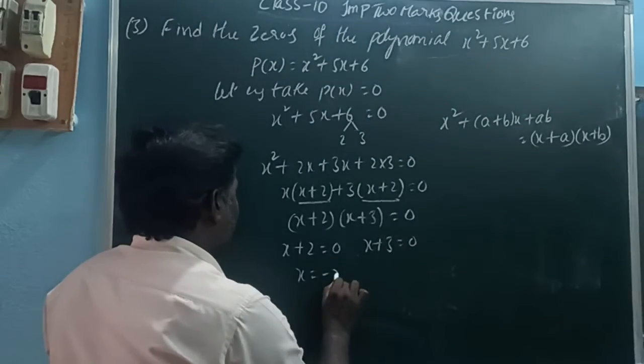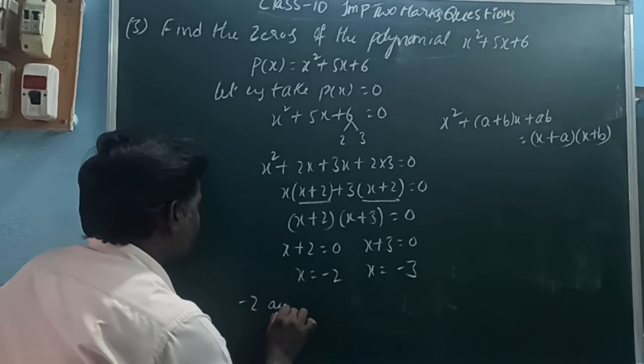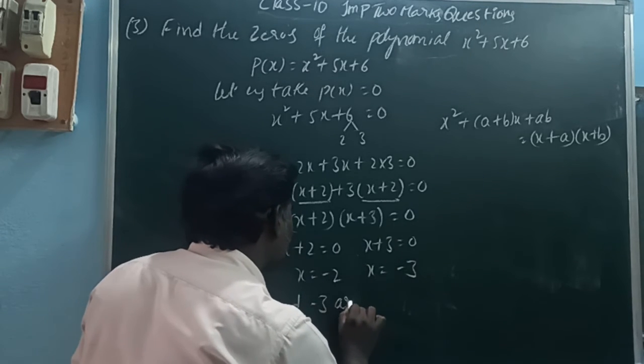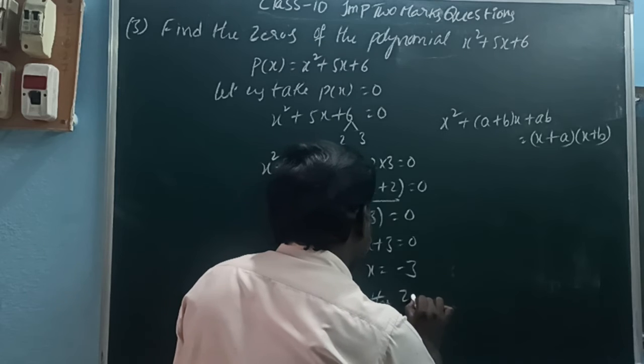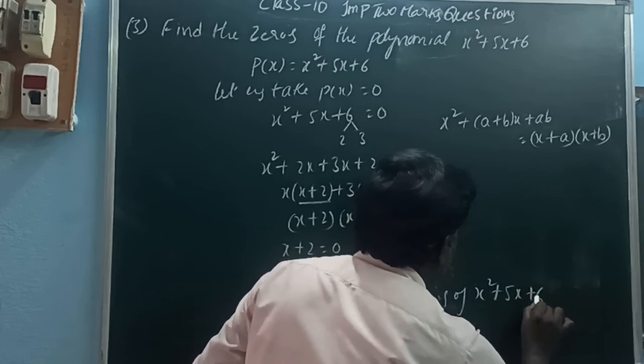Therefore, -2 and -3 are the zeros of the polynomial x² + 5x + 6.